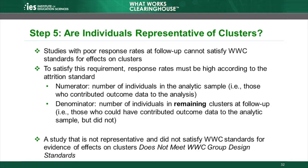This means that study authors must provide some measure of the number of individuals within clusters at or near the time the outcome was measured to meet the representativeness requirement. For example, a study that randomly assigns schools to conditions and assesses student outcomes at the end of the year might provide end-of-year school enrollment figures to use for the denominator.